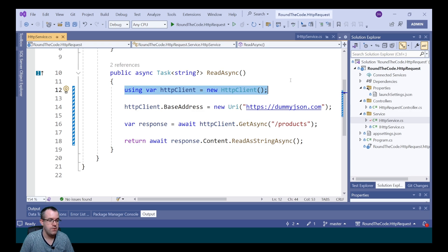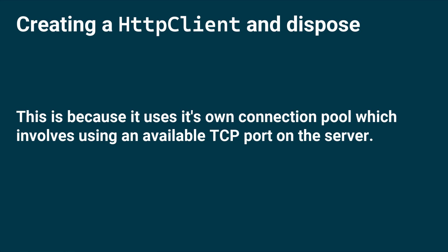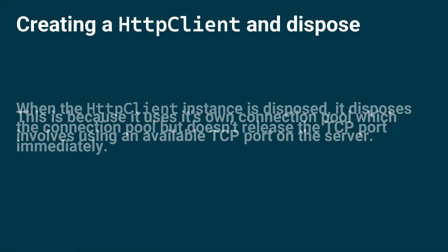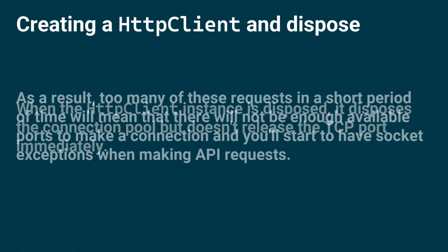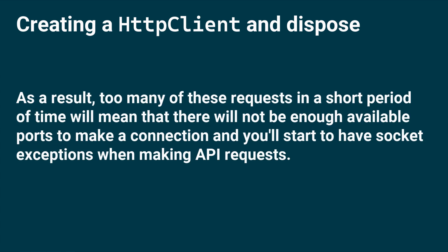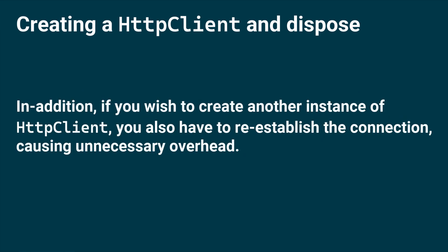The problem with this method is that we're not meant to have too many HTTP client instances open at the same time. Each uses its own connection pool, which involves an available TCP port on the server. When an HTTP client instance is disposed, it disposes the connection pool but doesn't release the TCP port immediately. Too many requests in a short period will exhaust available ports, causing socket exceptions. Creating another instance also re-establishes the connection, causing unnecessary overhead.